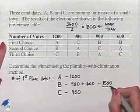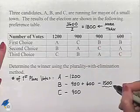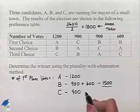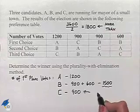Now, candidate B has the most number of votes, but notice that this is not going to be a majority. And notice that candidate C has the least number of votes. Now, let's rewrite the table without C.